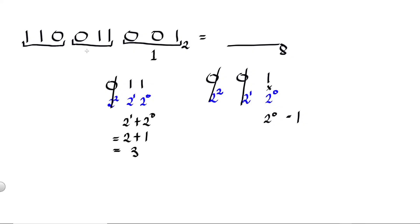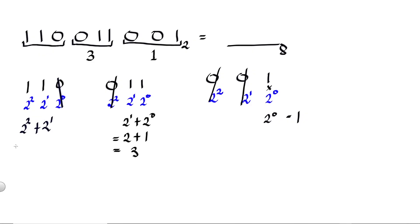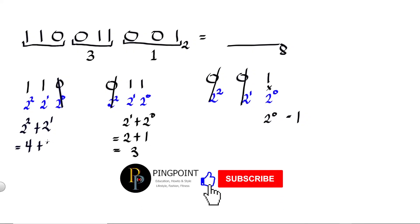Next group is 110 — positional values are two raised to zero, two raised to one, and two raised to two. 1 × 2² = 4, plus 1 × 2¹ = 2. Since the last digit is zero, we cancel it. So 4 + 2 = 6. The answer is 6.